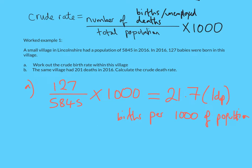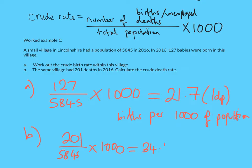For part B we need the crude death rate. Using the same method — number of deaths divided by 5,845 times 1,000 — we get 34.4 deaths per 1,000 of the population. So the crude death rate is higher than the birth rate, which tells us something about the kind of population we might expect there.